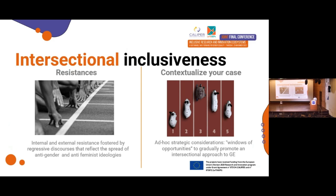In the Caliper project from the beginning, we tried to adopt an intersectional approach and promote it within our institutions during the GEP implementation process. Our partners found themselves negotiating and adding other dimensions and grounds of inequality apart from gender when implementing their gender equality plan, and encountered resistances which they addressed through ad hoc solutions and considerations.